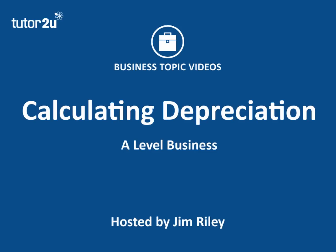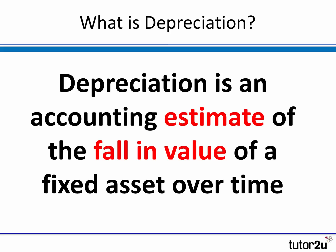In this business topic video we're going to take a look at the two main methods of calculating depreciation. Depreciation is an accounting term and it's a cost in the accounts of a business, but the cost itself represents just the estimate of the fall in value of fixed assets over time. Depreciation doesn't actually involve a cash flow — it's an estimate of the fall in value. Let's look at what we mean by depreciation and then briefly introduce the two main methods by which it is calculated.